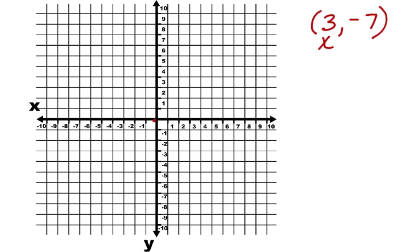7 is negative. That's our y value. So we're going to go down 7. And that's where we plot our point. If we wanted to name it, we could name it point A. And we would put point A there.